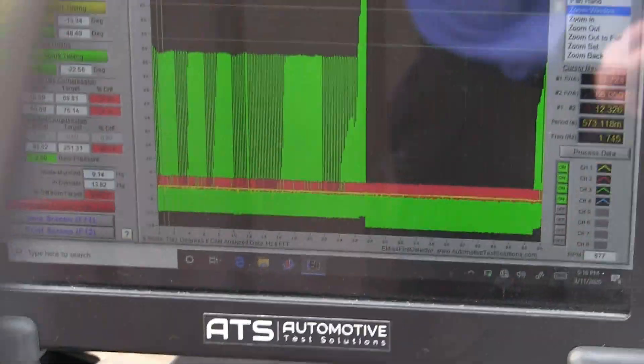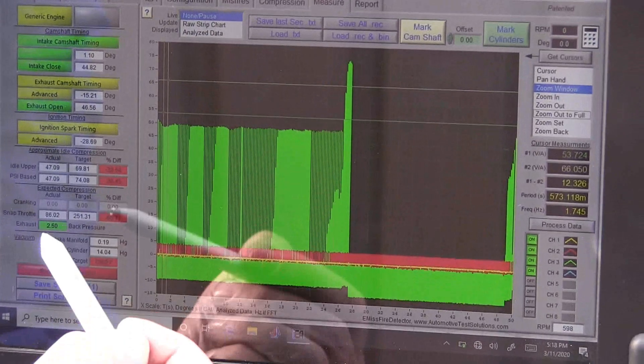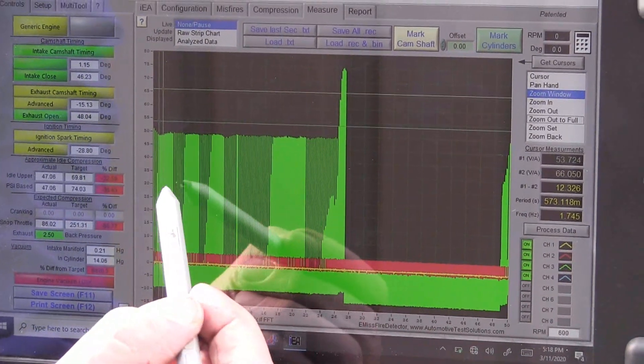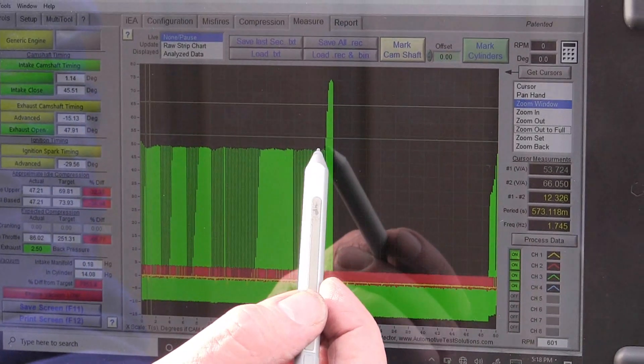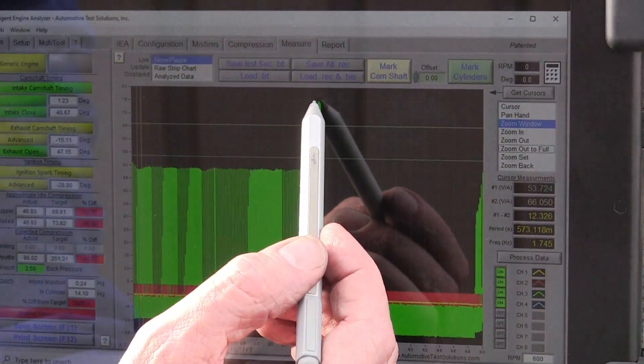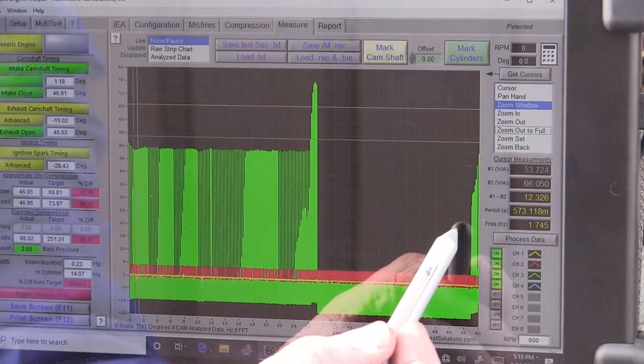We'll pause the data and now we want to analyze it. Now that we've captured the data, this is the data where we have idle. We started to open the throttle up revving the engine. We got compression. But then we have something happen right here until we let off. This is our misfire.